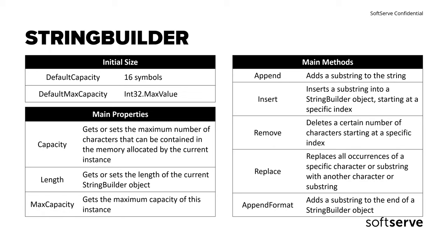The StringBuilder Length property indicates the number of characters the StringBuilder object currently contains. If you add characters to the StringBuilder object, its length increases until it equals the size of the StringBuilder Capacity property, which defines the number of characters the object can contain. If the number of added characters causes the length to exceed its current capacity, new memory is allocated, the Capacity property is doubled, new characters are added, and the Length property is adjusted.